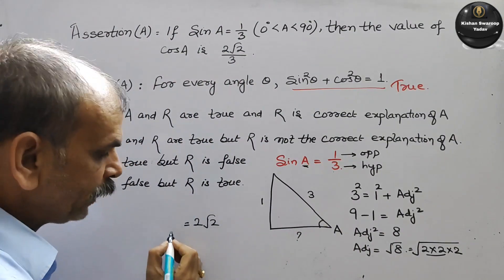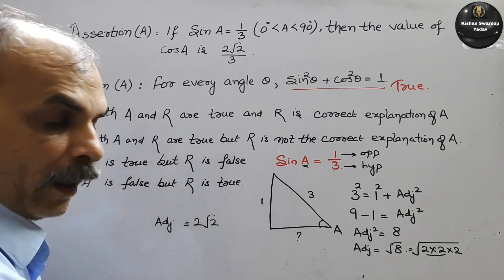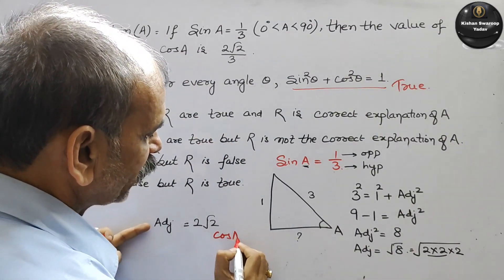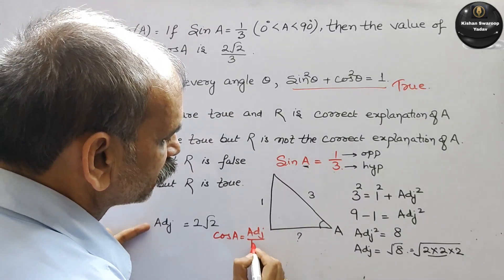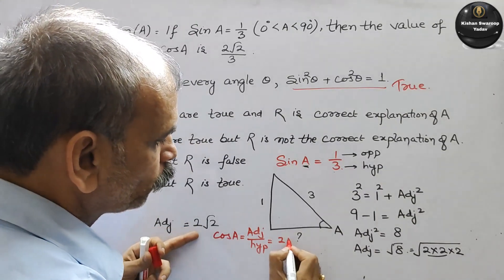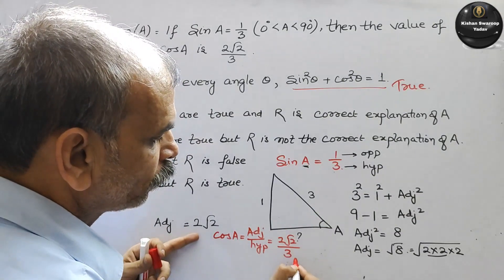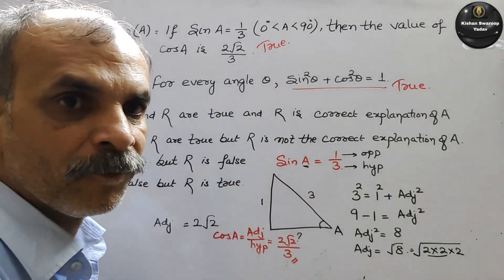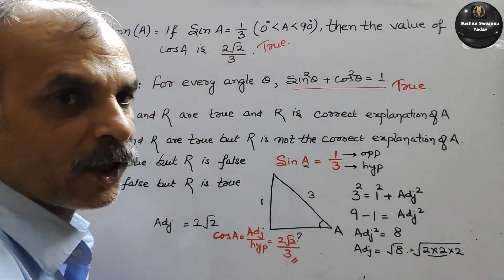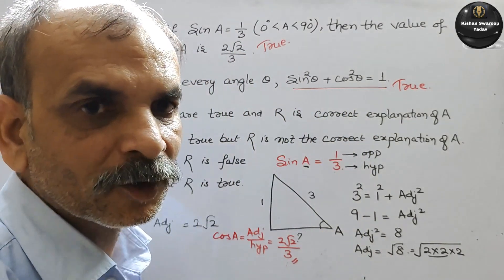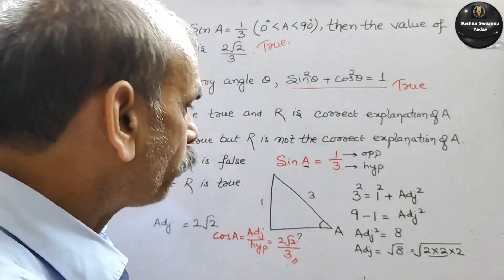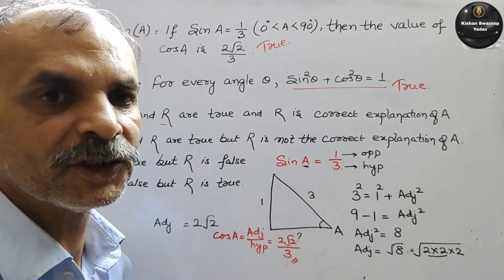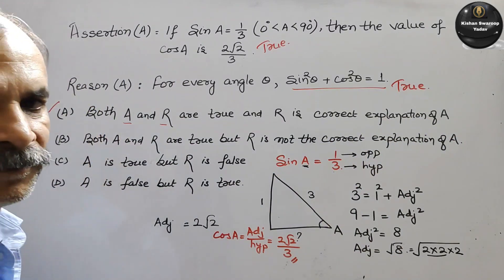तो √8 = 2√2 और hypotenuse is 3. तो देखो यहाँ पर same value आ गई, that means this is also true. दोनों true हैं. एक में बात किया sin की, दूसरे में बात किया cos की, और हमारी identity भी वही बोल रही है. That means option A is correct — both assertion and reason are true and reason is the correct explanation of assertion.